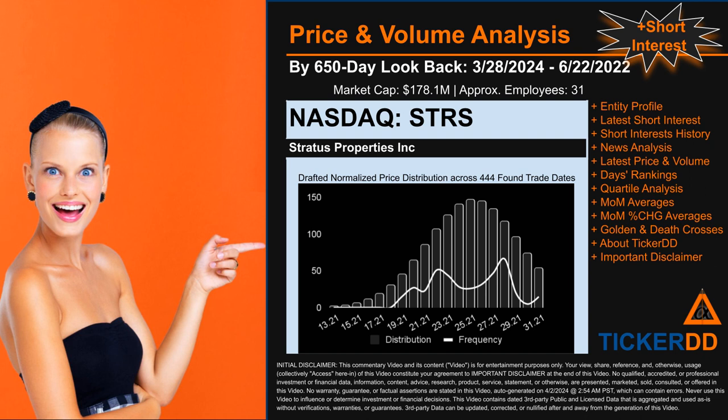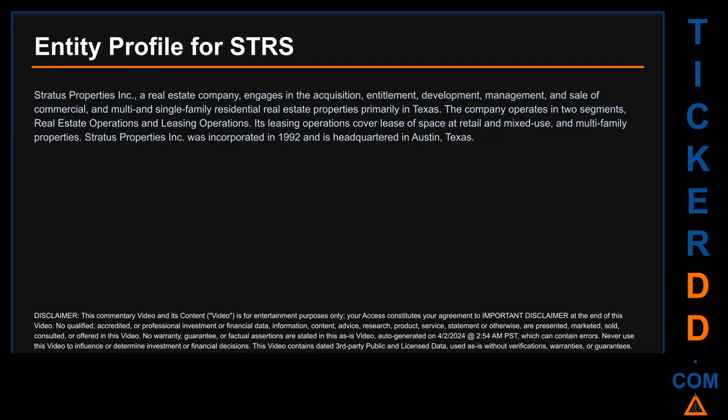Hello, my name is Carl. I searched the public web to find information about the company behind this ticker. Here's what I found: Stratus Properties Inc. is a real estate company that engages in the acquisition, entitlement, development, management, and sale of commercial, multi-family, and single-family residential real estate properties, primarily in Texas. The company operates in two segments: real estate operations and leasing operations. Its leasing operations cover lease of space in retail, mixed-use, and multi-family properties. Stratus Properties Inc. was incorporated in 1992 and is headquartered in Austin, Texas.